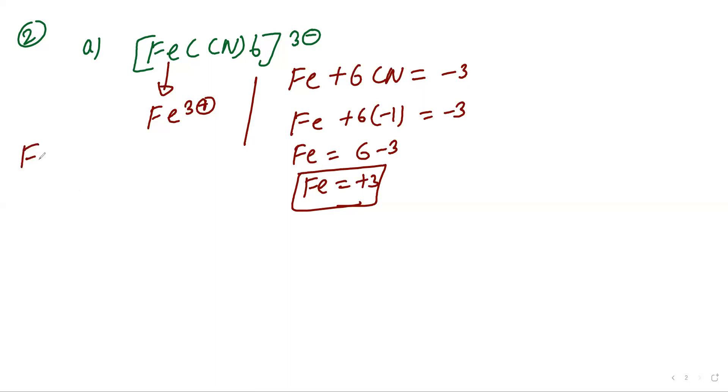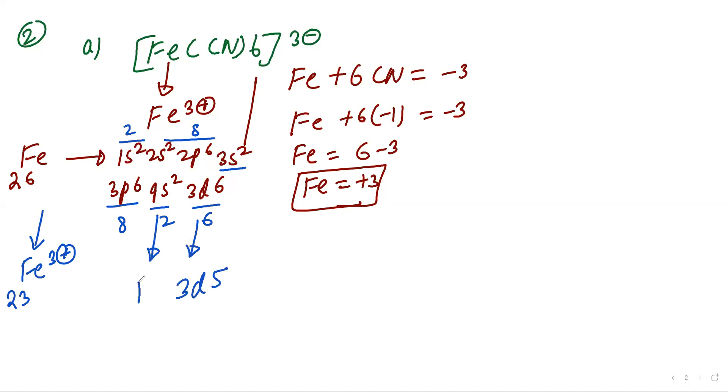As we know atomic number for iron is 26. Electronic configuration will be 1s2, 2s2, 2p6, 3s2, 3p6, 4s2, 3d6. Count the number of electrons. So 26 total. For Fe 3 plus, after losing 3 electrons it becomes 23. Two electrons lose from the s and 1 from the d, so it will become 3d5, 4s0.